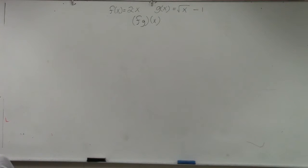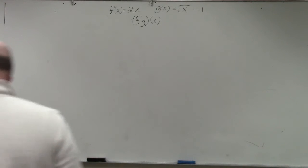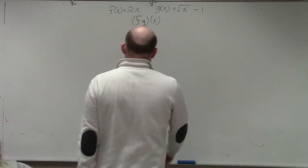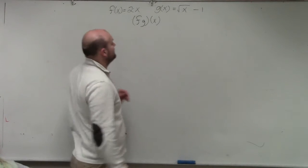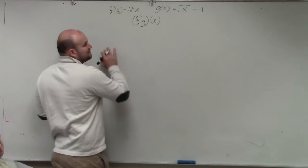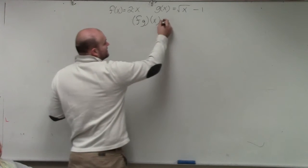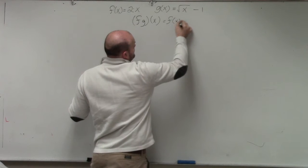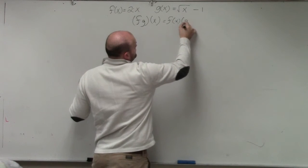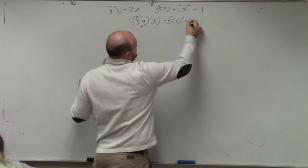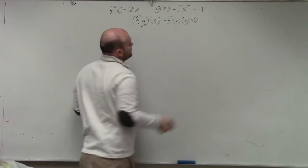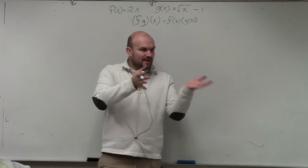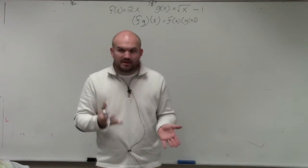New stuff for you — at least something that has more of a step-by-step process. So just remember, ladies and gentlemen, f of g of x — all that simply means is f of x times g of x. So that's all we're doing: we're multiplying one function by the other function.